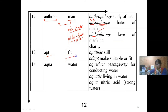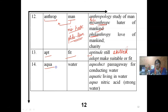APT means 'fit.' APTITUDE — that is skill, being fit. ADAPT — making suitable or fit. So APT means fit and gives us words like aptitude and adapt.